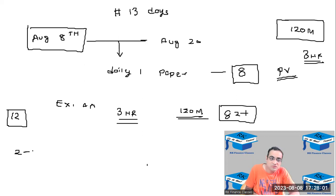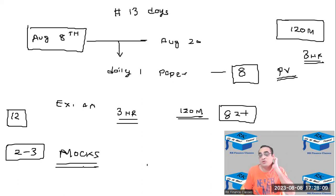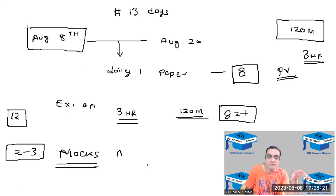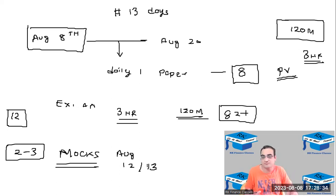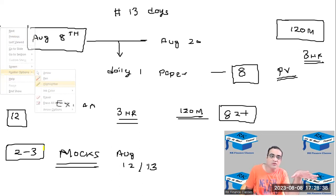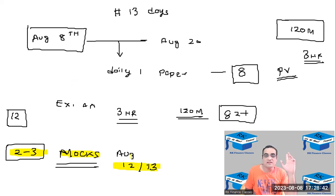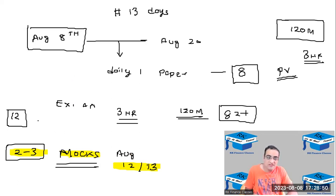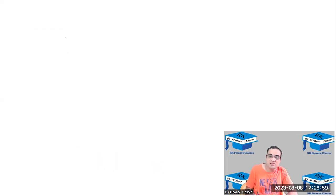In the classroom we are going to have at least two to three mocks. You should take at least two mocks in class — do not delay. Even if your complete revision is not done, try to take one mock at the earliest, which could be August 12 or 13. The second mock would be mostly on August 16 — keeping a gap of three days in between. Whatever questions go wrong in these mocks, do a separate analysis of those.